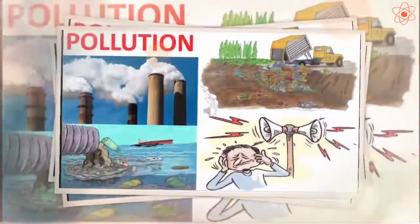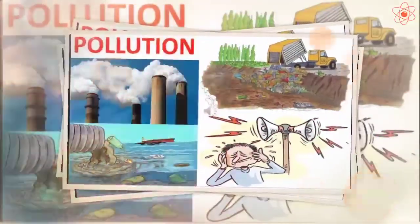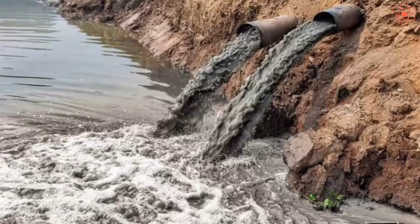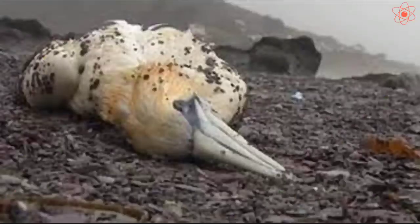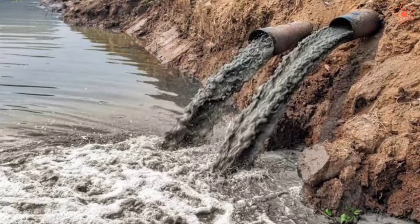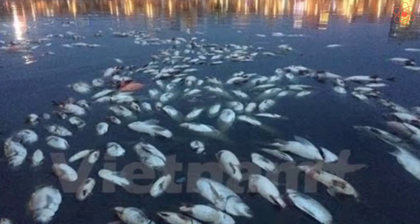Third cause: pollution. Pollution of soil, air, and water adversely affects many plants and animals. Pesticides and other harmful chemicals accumulating in water bodies kill fishes and other aquatic animals.